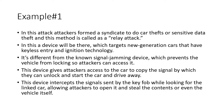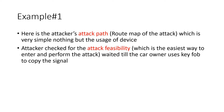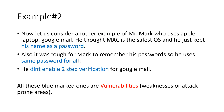The attack path is the roadmap of the attack. Attackers checked for attack feasibility — which is the easiest way to enter and perform the attack. In this case, they waited until the car owner used the key fob to copy the signal. That is the attack feasibility.